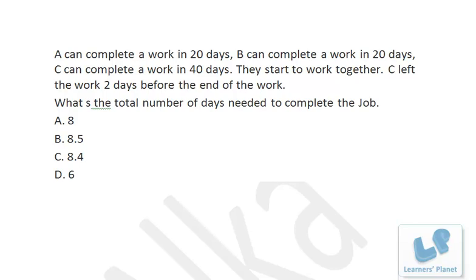A can complete the work in 20 days, meaning per day A is doing 1/20th of the work, or 5% of the work. Similarly, B is doing 5% of the entire work per day, and C is doing half of that, which is 2.5% of the work per day.